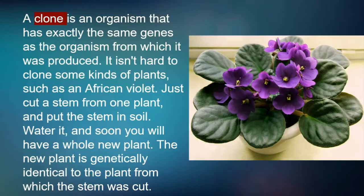Cloning. A clone is an organism that has exactly the same genes as the organism from which it was produced. It isn't hard to clone some kinds of plants, such as an African violet like the one in the photograph. Just cut a stem from one plant and put it in soil. Water it and soon you will have a whole new plant. The new plant is genetically identical to the plant from which the stem was cut.